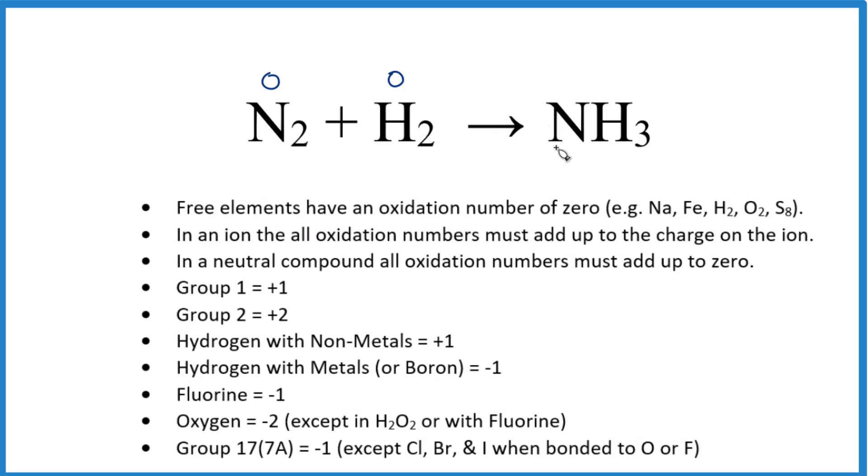Then for nitrogen, we don't really have a good rule for that, but we do know that hydrogen is going to be, with a non-metal like nitrogen, plus one. And when we have a neutral compound, like NH3, there's no plus or minus after it. In a neutral compound, all the oxidation numbers add up to zero. Three times plus one, that's plus three. So we need a negative three to have this add up to zero, and that is the oxidation number on the nitrogen.